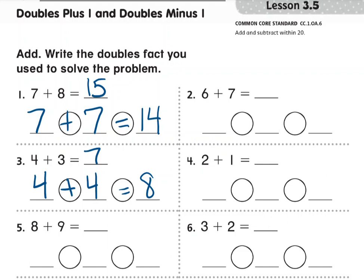It doesn't matter which addend you use, but you're going to make a double of that addend. Then depending on whether you're going one higher or one lower, you're going to do a doubles plus 1 or a doubles minus 1 to find the answer.